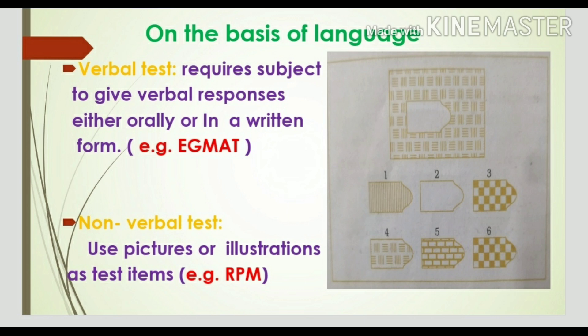Non-verbal tests use pictures or illustrations as test items. An example is RPM — Raven's Progressive Matrices. In this test, the subject has to complete a pattern by choosing from six alternative figures. As shown in the picture, the above pattern can be completed by placing option number four, which is the correct answer.